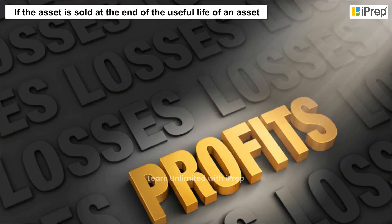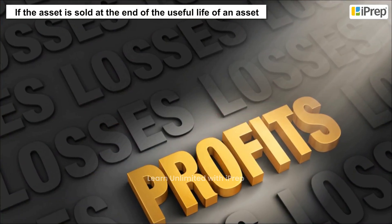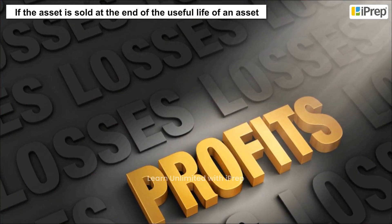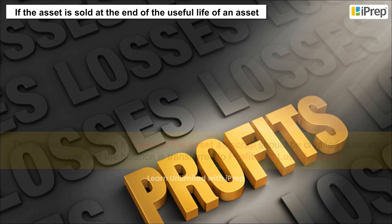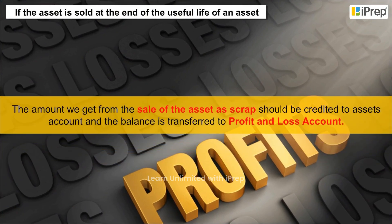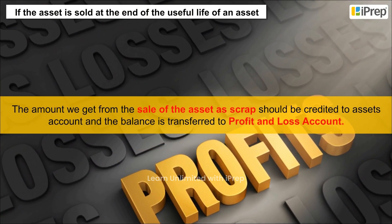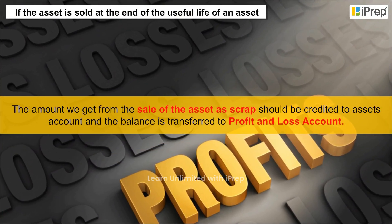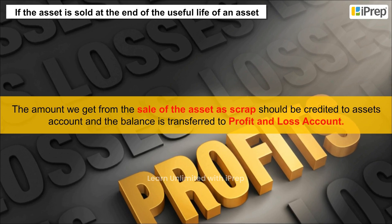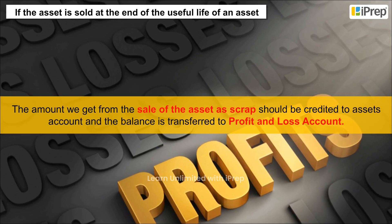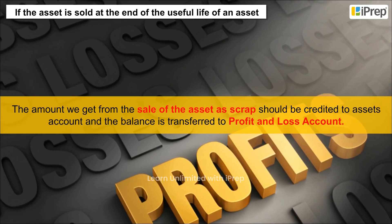If the asset is sold at the end of its useful life, the amount received from the sale of the asset as scrap should be credited to the asset account, and the balance is transferred to the profit and loss account.